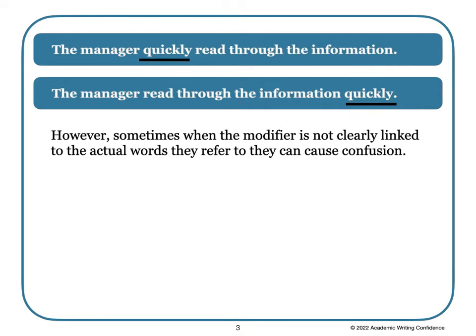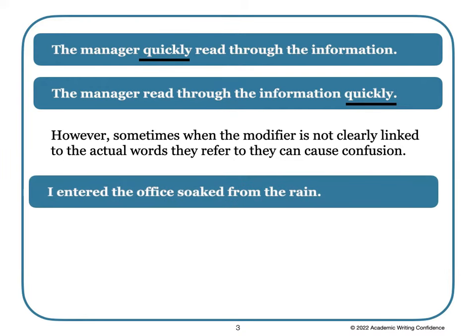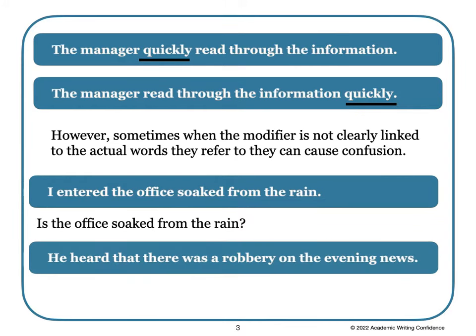However, sometimes when the modifier is not clearly linked to the actual words it refers to, it can cause confusion. For example: 'I entered the office soaked from the rain' — is the office soaked from the rain? This sentence could be a little confusing. Similarly, 'He heard that there was a robbery on the evening news' — did the robbery happen at the news studio? Again, this sentence could be confusing to the reader.